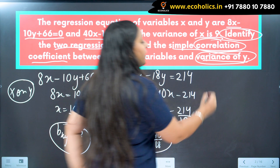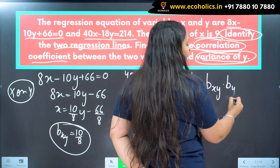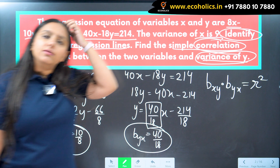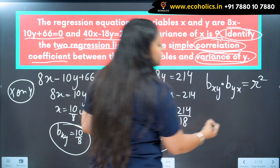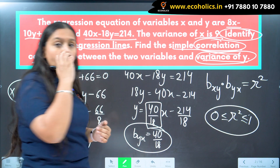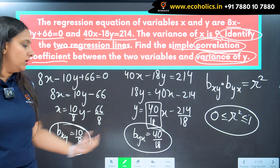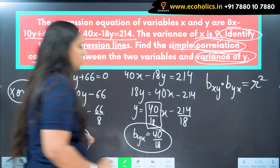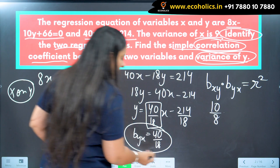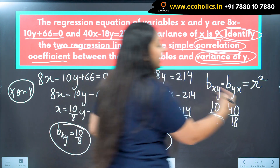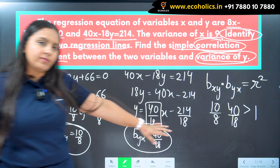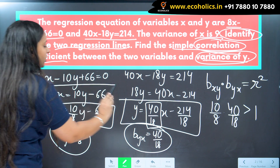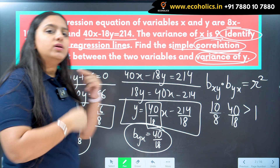Multiplying the two slope estimators gives R squared. R squared must be between 0 and 1. Multiplying 10/8 by 40/18 gives a value greater than 1, which violates this condition. So these assignments are incorrect — the first equation cannot be X on Y and the second cannot be Y on X. We must reverse the situation.